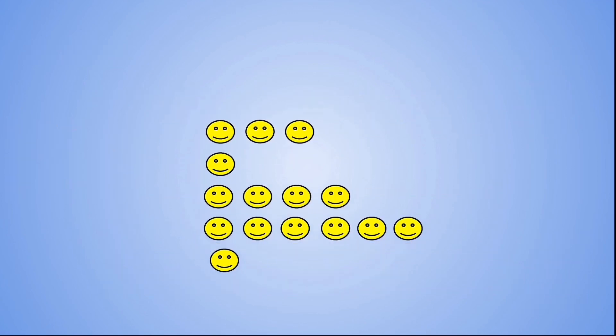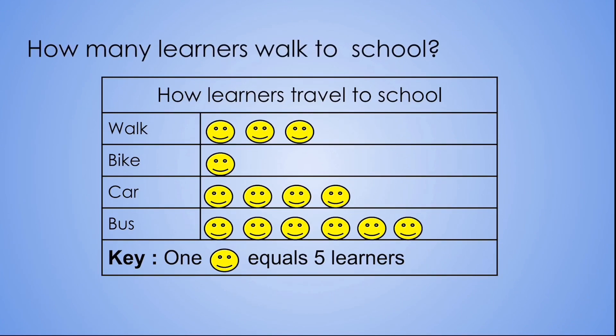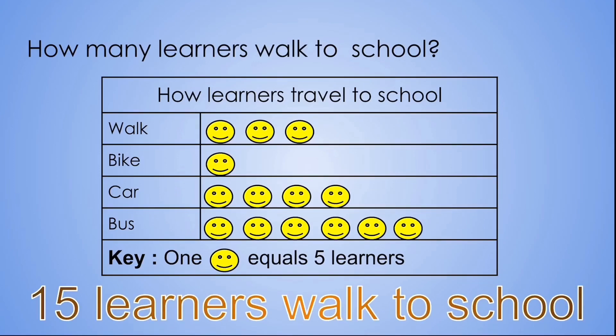Now let's use the exact same picture graph to figure out answers to the following questions. How many learners walk to school? First we need to look at the key, and what our key tells us is that one smiley face equals five learners. Now to answer our question, we need to look at the walking row. How many smiley faces are there? One, two, three. But remember each smiley face equals five learners, therefore we need to count in fives. Let's count together: five, ten, fifteen. Therefore there are fifteen learners that walk to school.